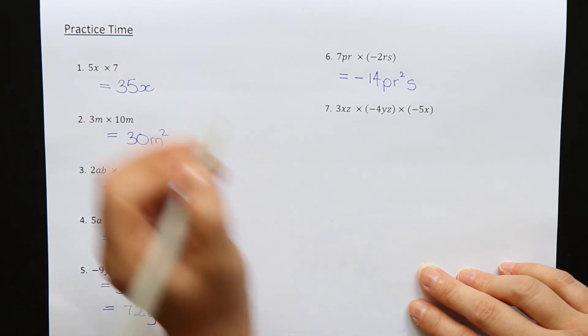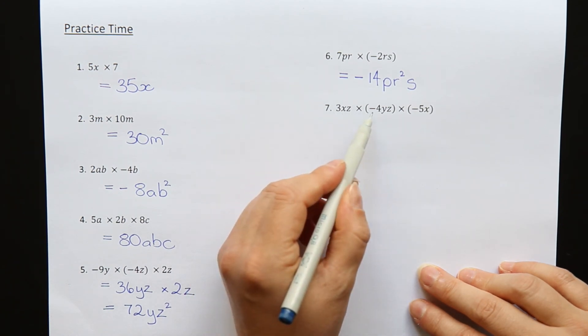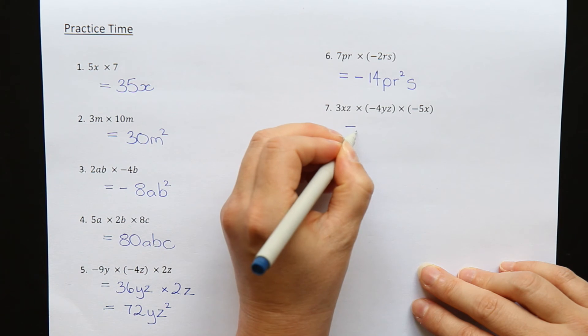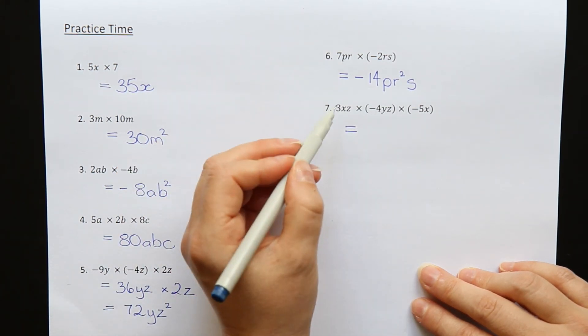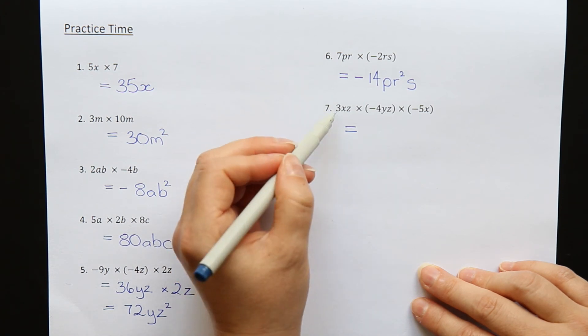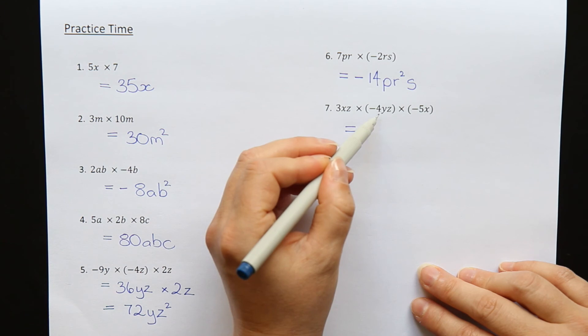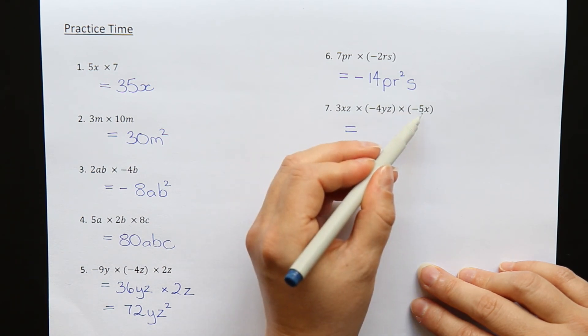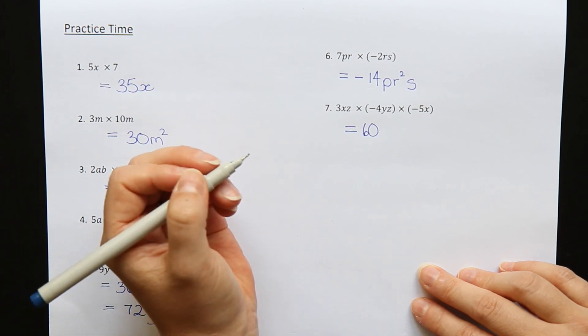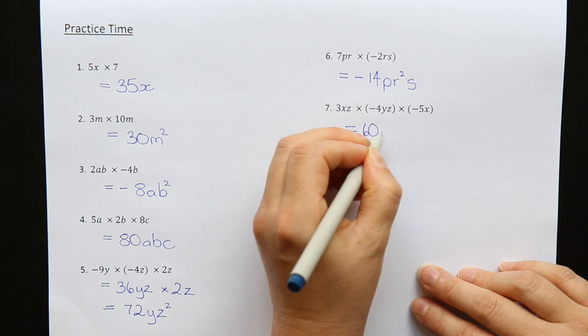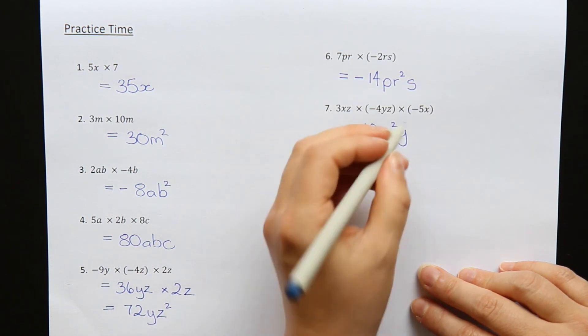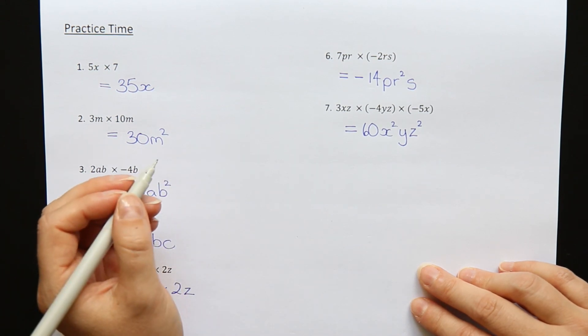Last question: 3xz times minus 4yz times minus 5x. Let's do it in one go. Multiply all the numbers together. 3 times minus 4 makes minus 12. Minus 12 times minus 5—the two minuses make it a positive, and 12 times 5 is 60. Let's look at the letters. There's x and another x, so x squared. There's one y, and z and another z, so z squared. 60x squared yz squared.